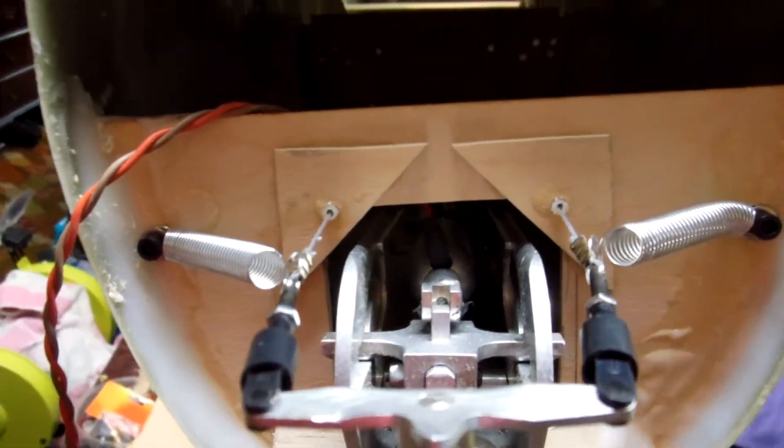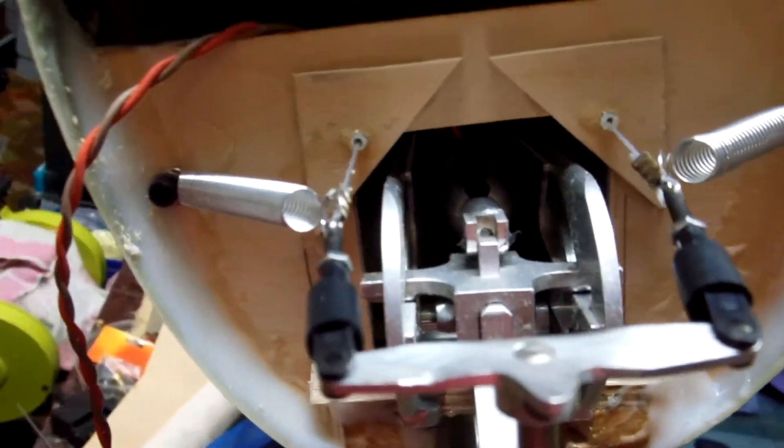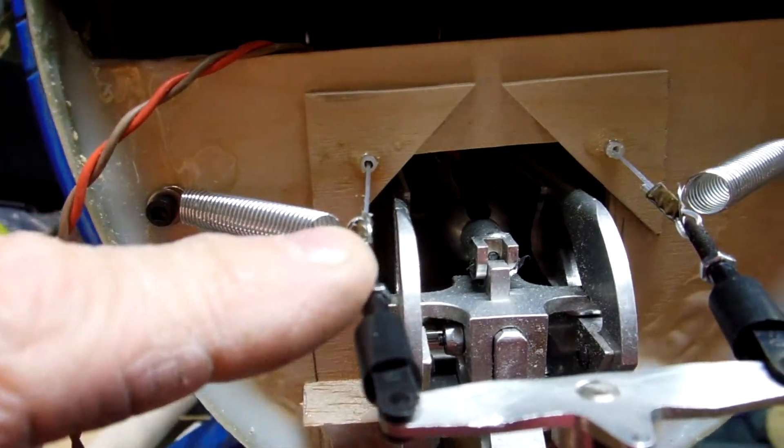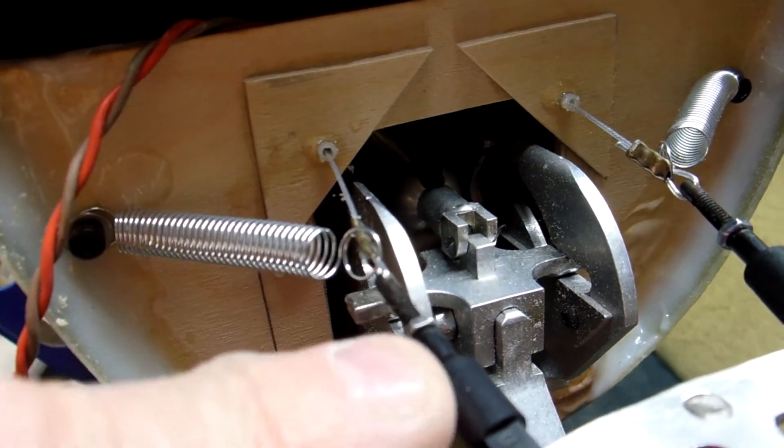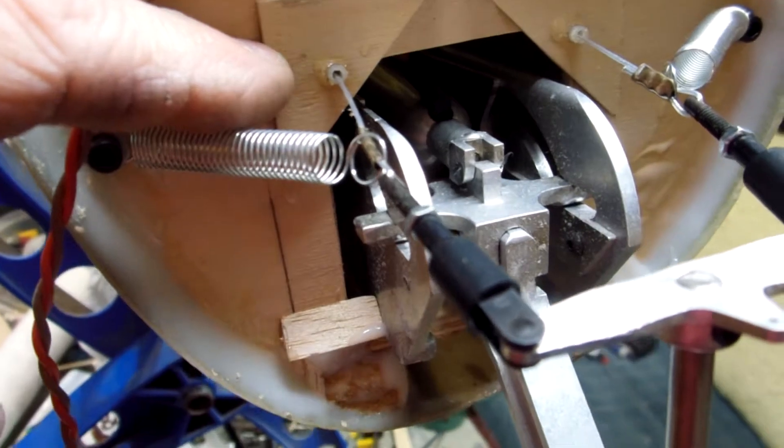So I'm getting some rigging done here on the P-47 and I ran into a little problem. When the gear was retracted, these turnbuckles, these fittings here, were going straight back and they were catching on the plywood and jamming the gear.